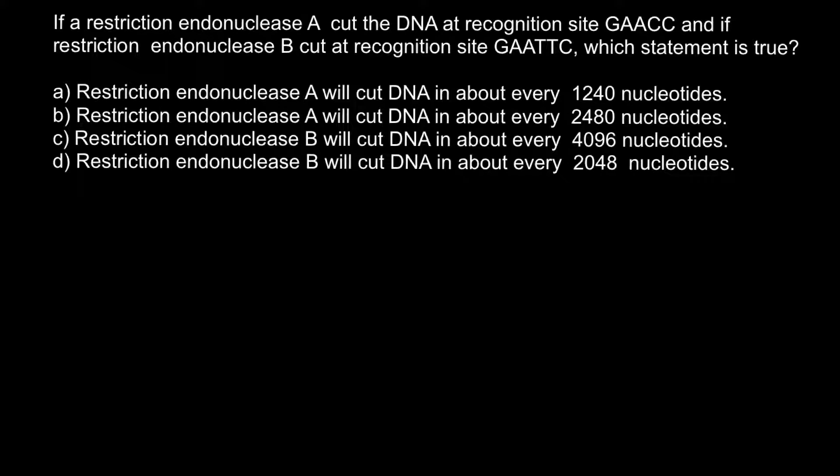Hello and welcome to Nikolai's genetics lessons. Today's problem is going to be about genetics and the application of the rule of probability. If restriction endonuclease A cuts the DNA at recognition site GAACC, and restriction endonuclease B cuts at recognition site GAATTC, which statement is true? You have to choose the correct answer between these four statements.